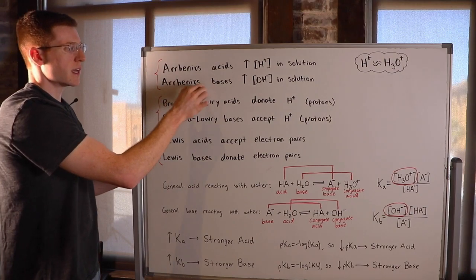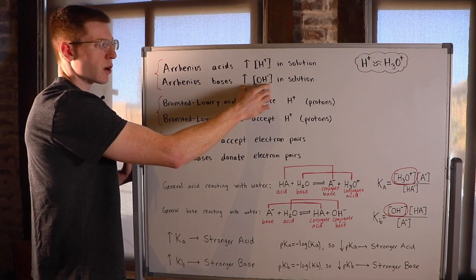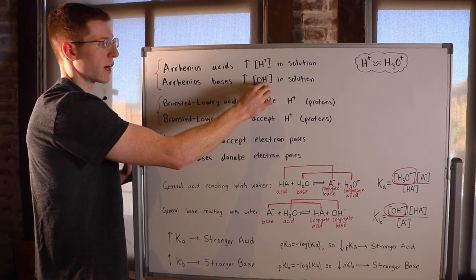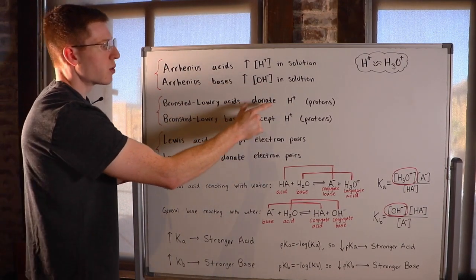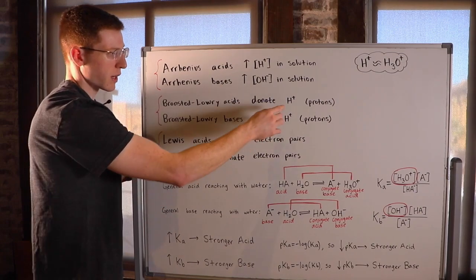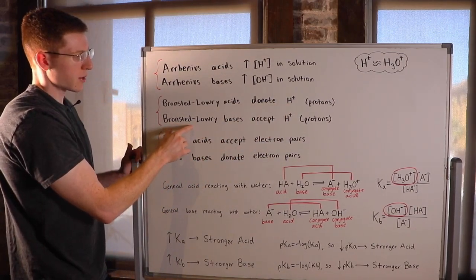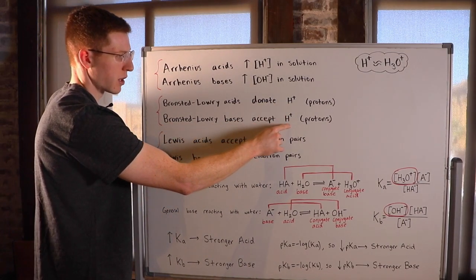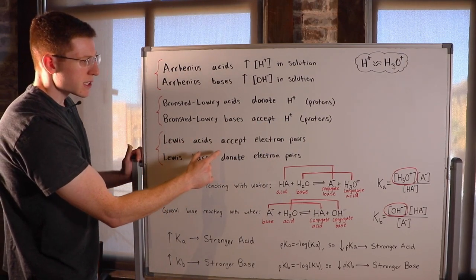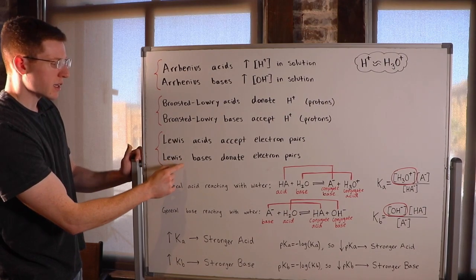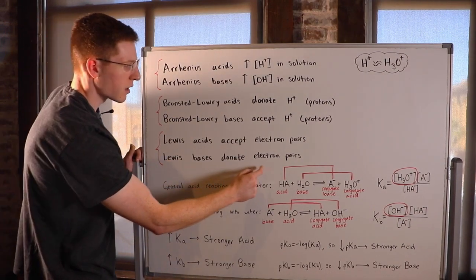An Arrhenius base, on the other hand, increases the concentration of OH- in solution, or hydroxide. Bronsted-Lowry acids actually donate protons to something else, or H+, while Bronsted-Lowry bases accept protons from something else, H+. Lewis acids accept electron pairs, and finally, Lewis bases donate electron pairs.